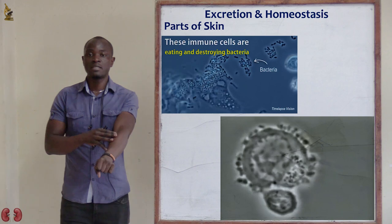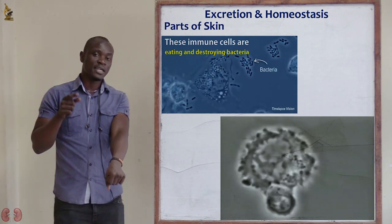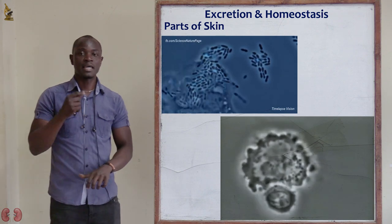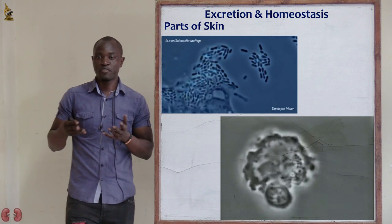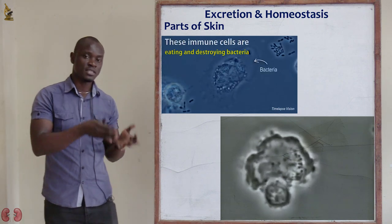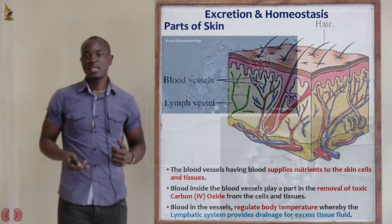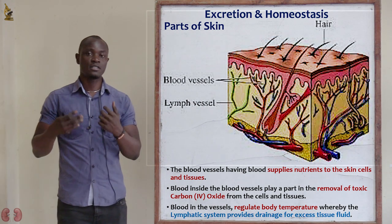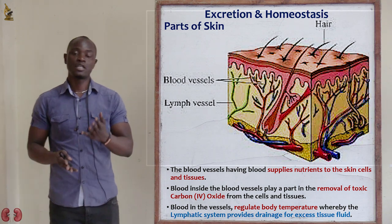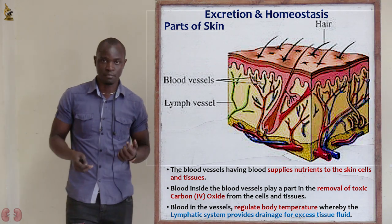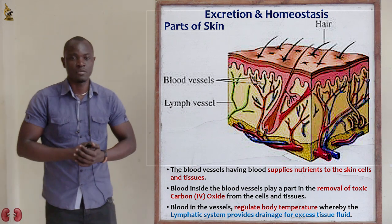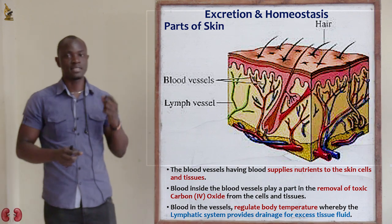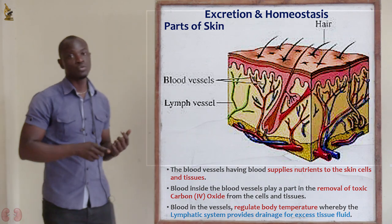If a harmful microorganism tries to enter through the skin, the lymph vessels produce lymphocytes that destroy the harmful bacteria or pathogen before it invades other parts of the body. Additionally, the lymphatic vessel drains excess tissue fluid and returns it back into the bloodstream — a function we studied in the topic of transport in plants and animals.